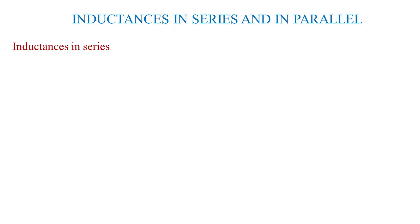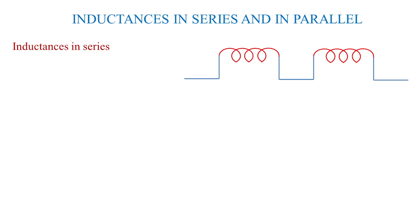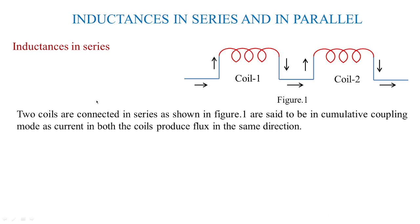Let us go with the first concept: inductors arranged in series in a cumulative arrangement. In figure 1, two coils are connected in series. The current flowing into coil 1 is the same current going into coil 2 — current in series remains the same. Two coils are said to be in cumulative coupling mode when the current in both coils produces flux in the same direction. When both coils have a common current which produces flux in the same direction, it becomes a cumulatively coupled circuit in series.